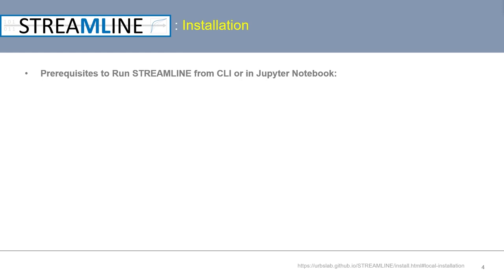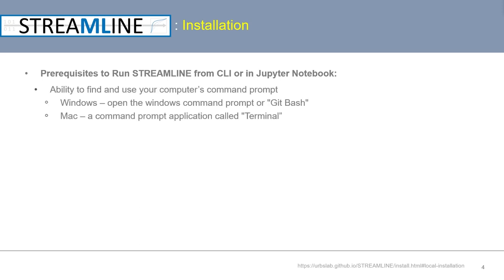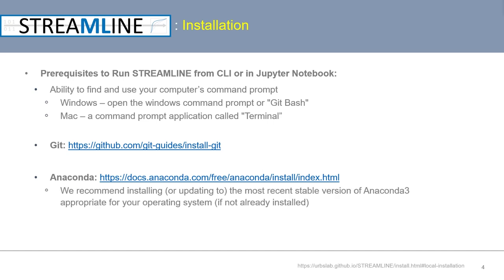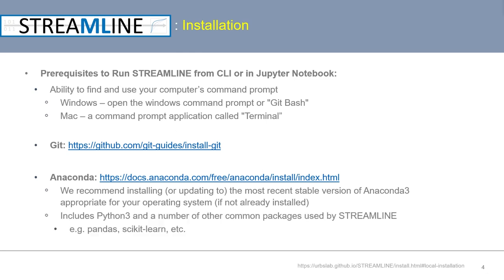Now let's cover Streamline installation, which is the same as for the Jupyter notebook run mode. As prerequisites, you'll need to find your computer's command prompt — on Windows you can use the Windows command prompt or Git Bash, and on a Mac you can use Terminal. You'll also need to install Git and Anaconda. We recommend installing or updating to the most recent stable version of Anaconda 3, which includes Python 3 and common packages used by Streamline such as Pandas and scikit-learn.